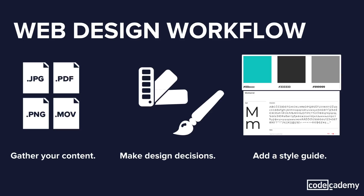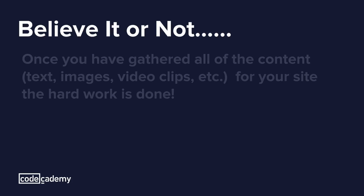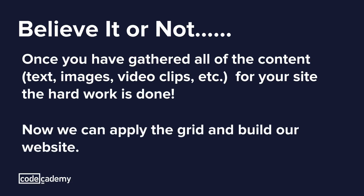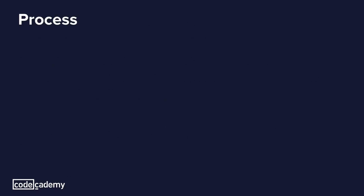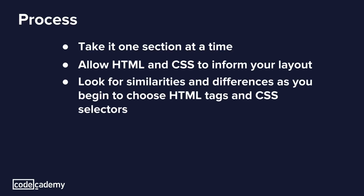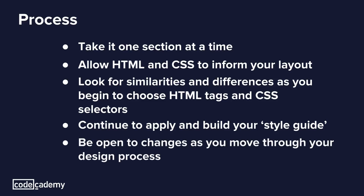Although it may be hard to believe, once you've gathered all of the content for your site, the hard work is done. Now you can build your site and let the underlying grid inform your design. Here are some ideas on how to proceed: pick one section at a time, allowing HTML and CSS to inform the layout. As you proceed, look for the similarities and the differences as you choose your HTML and CSS. Build your style guide and be open to change.